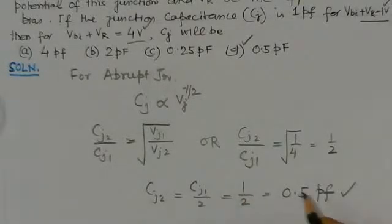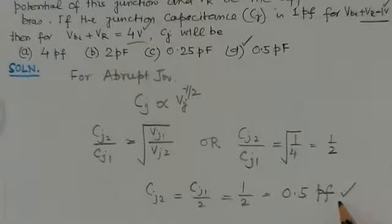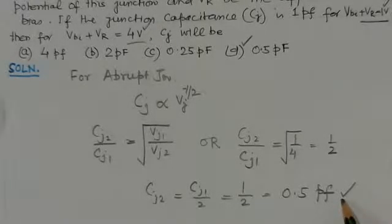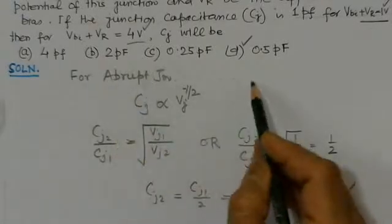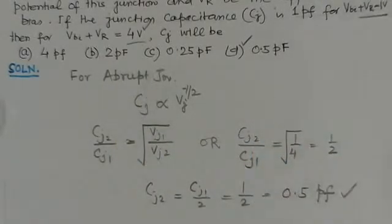This gives C_J2 equal to 0.5 pF, which is option D — the correct answer.